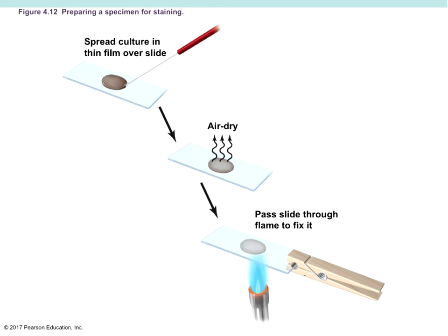When we prepare a specimen for staining, we first put our culture as a thin film on a slide and let it air dry a little. We then pass it through a flame to fix it — this process is called heat fixing. By heat fixing, we do two things: we allow the specimen to stay stuck to the slide, and since we're working with bacteria, we kill the specimen so we don't run the risk of contamination.